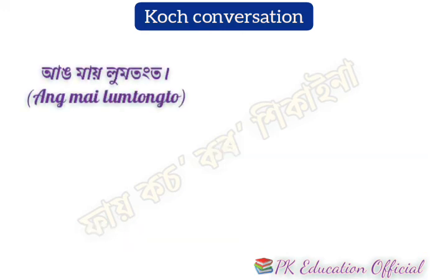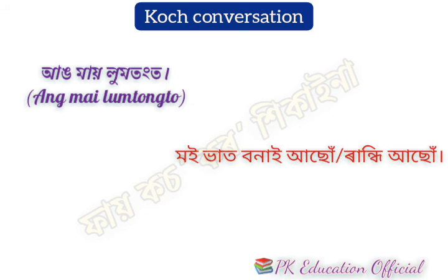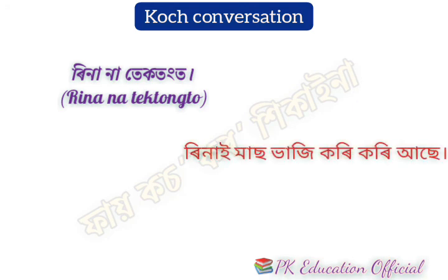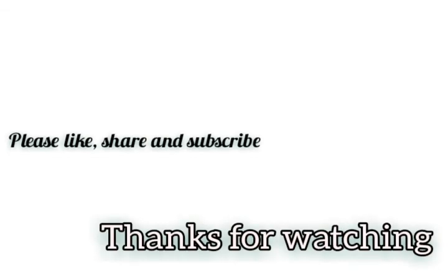In Assamese: 'Moi bhaat bonay asu.' In English: I am cooking rice. Next, in Assamese: 'Reena yi maaz bhaji kuriyasse.' In English: Reena is frying vegetables.